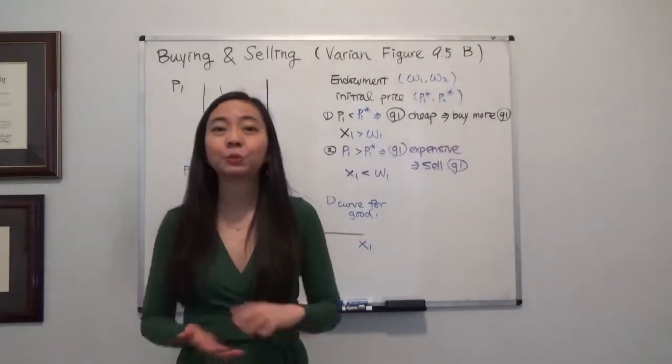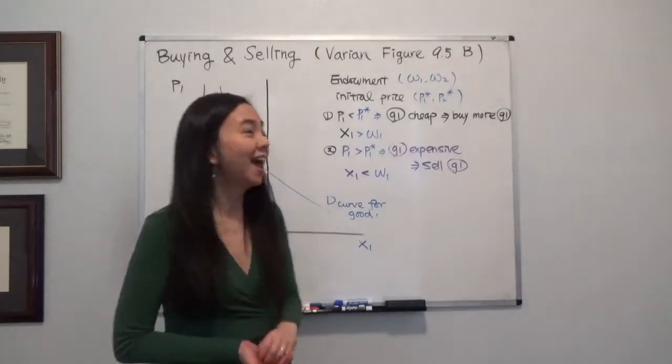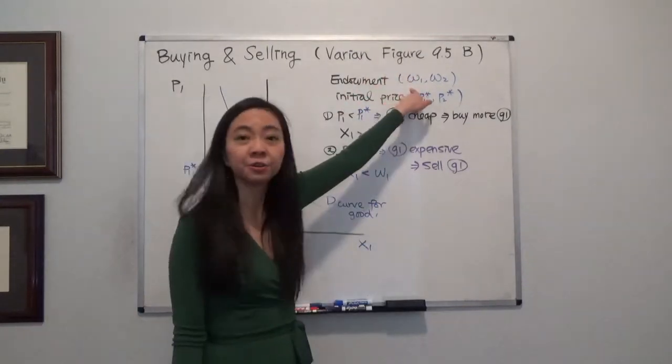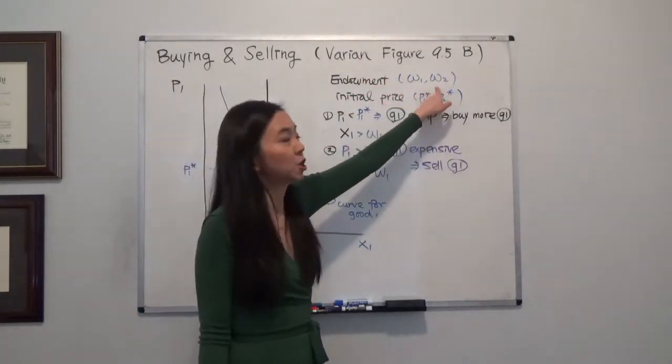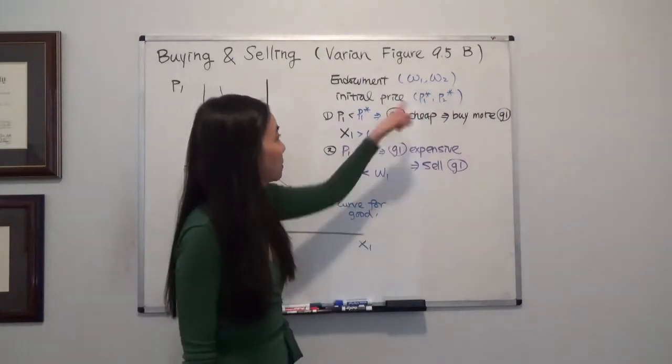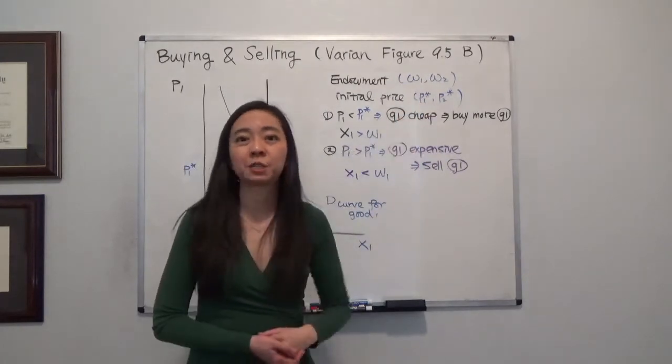So remember from the previous video we talked about how initially I had an endowment of good 1 and good 2 in the amount of omega-1 and omega-2, and the initial price of good 1 and good 2 were P1 star and P2 star respectively.